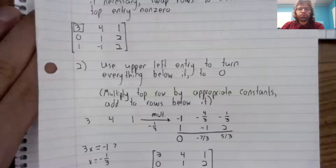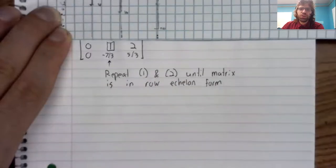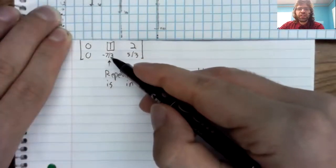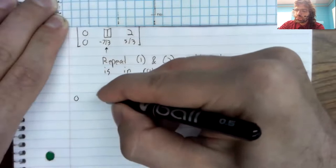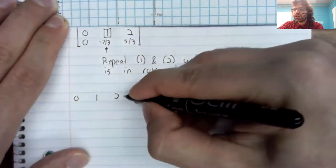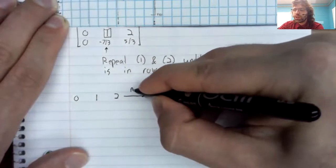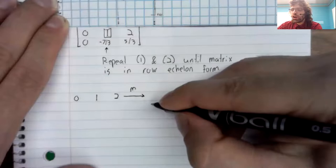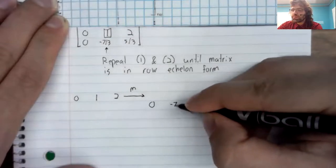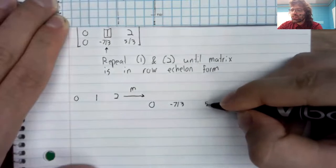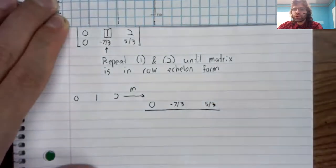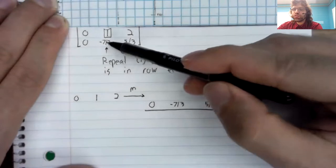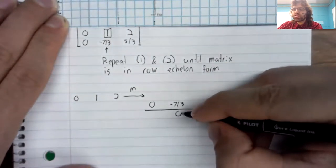Step two, use this upper left entry to turn everything below it to zero. So we're going to turn this negative seven thirds to zero. And the method we're going to use is that we're going to take this second row, multiply it by a constant, and add it to the third row.